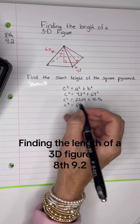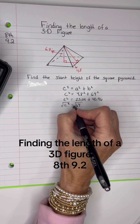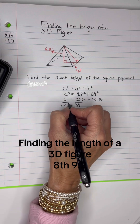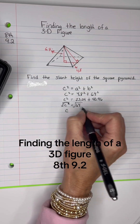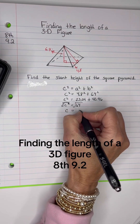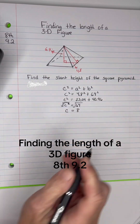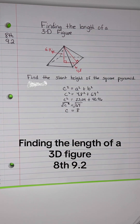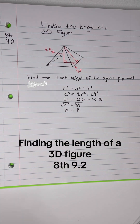To get rid of the square, you use the square root. The square cancels the square root out. C is free, and we have the square root of 64, which is 8. It would be negative 8 also, but we don't want to use a negative for a length — so just 8.